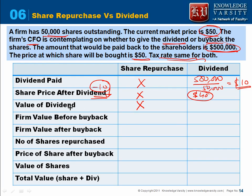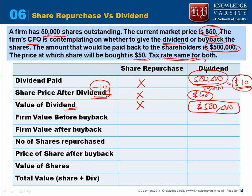The value of the dividend to shareholders: each shareholder receives $10 as dividend. With 50,000 shares, the total value of dividend distributed is $500,000 — exactly the amount the firm wanted to distribute.